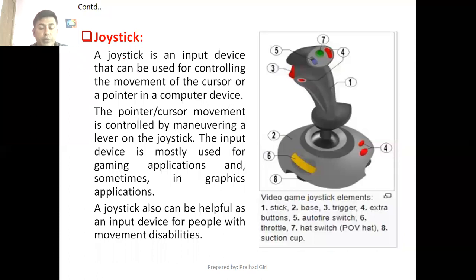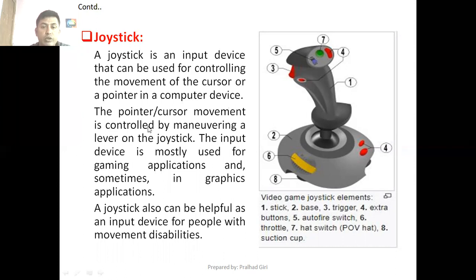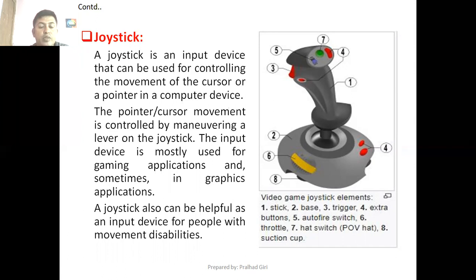The next input device we will be discussing is joystick. A joystick is an input device that can be used for controlling the movement of the cursor or pointer in a computer. The pointer or cursor movement is controlled by maneuvering a lever on the joystick in different directions. You can rotate the lever in 360 degrees, and as soon as you rotate it the cursor will move in corresponding directions on the screen. There is also a thumb press at the top through which instructions can be sent to the computer. This device is mostly used for gaming applications.